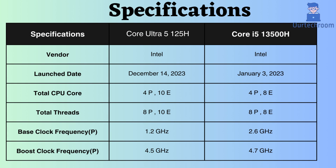The Core Ultra 5 125H was released 11 months after the release of the Core i5-13500H. The Core Ultra features 4 performance cores and 10 efficiency cores, whereas the Core i5-13500H has 4 performance cores and 8 efficiency cores. Additionally, in terms of threads, the Core Ultra has more than the Core i5-13500H.